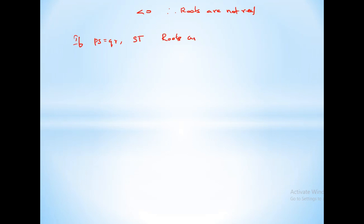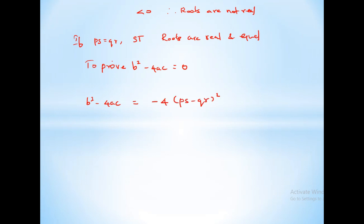Second part: if ps equals qr, show that roots are real and equal. To prove: B²-4ac equals 0. B²-4ac equals minus 4(ps minus qr)² equals minus 4(0)² equals 0. Hence proved. So these example sums are complete. See you soon with the next video.